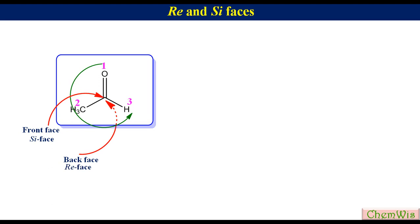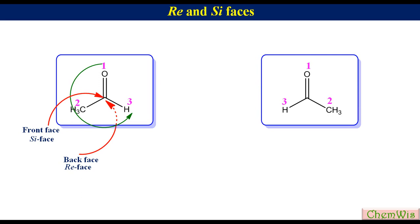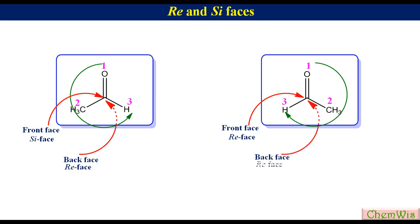If the same molecule is drawn in a different orientation, then the arrow drawn from 1 to 2 to 3 will have a clockwise direction, so the front face will be the Re face while the back face will be the Si face.